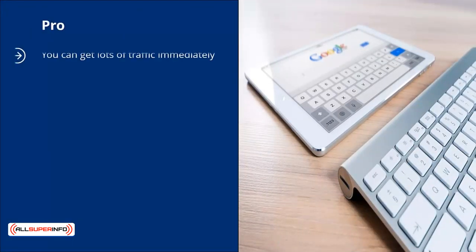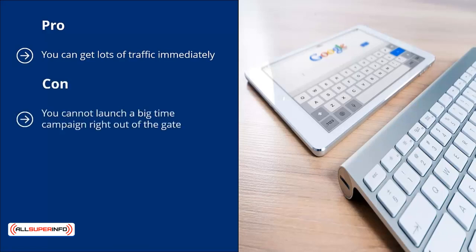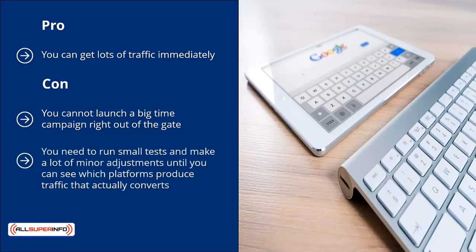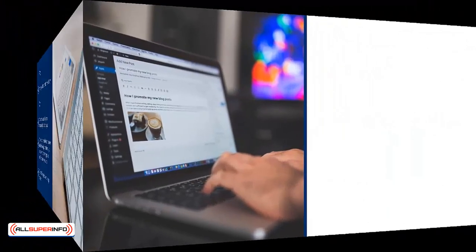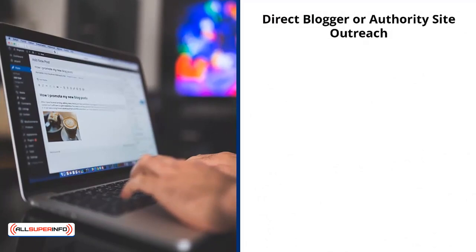Pro: you can get lots of traffic immediately. Con: you cannot launch a big-time campaign right out of the gate — you might end up spending tremendous amounts of money with very little to show for it. You need to run small tests and make minor adjustments until you can see which platforms produce traffic that actually converts. You can also modify how you describe your link and other factors to maximize click-through and then conversions. Direct traffic requires a multi-step process. Even after spending time, effort, and money, there's still no guarantee you will generate a profit.